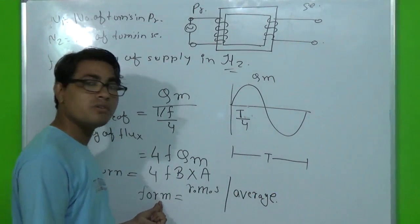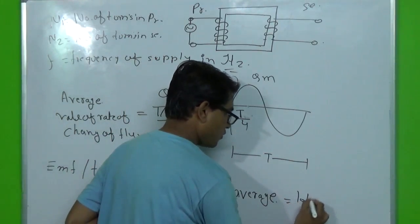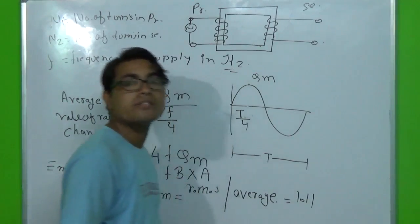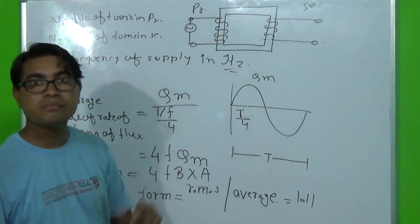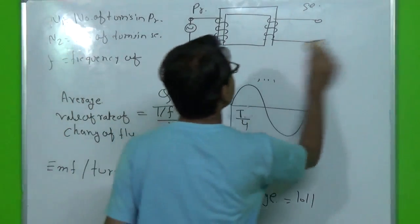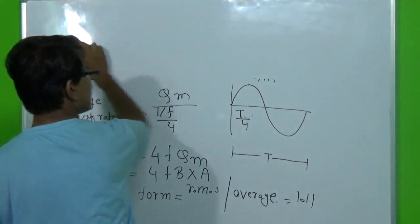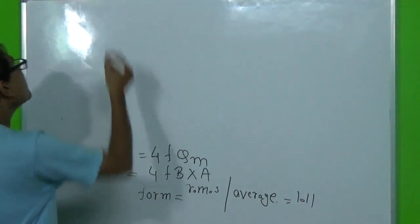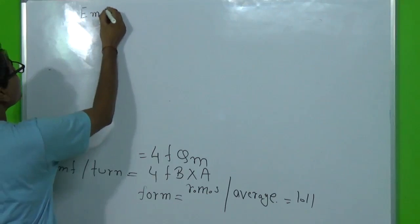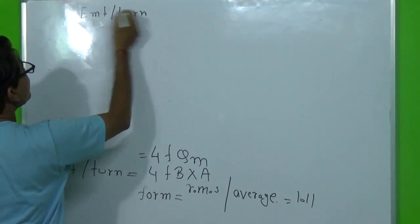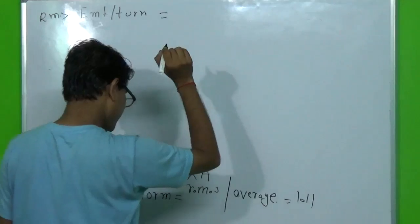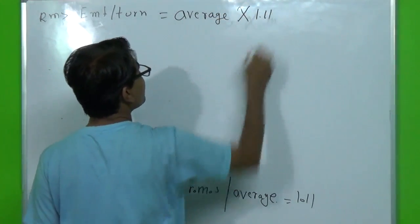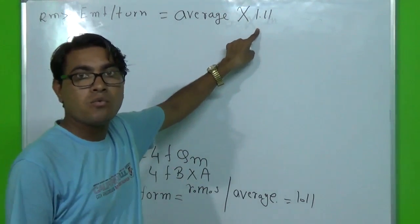We can convert this average value into RMS value. The form factor is given as RMS value divided by average value of an alternating quantity, and it is always equal to 1.11. So we multiply the average value by 1.11 to get the RMS value. The RMS value of EMF per turn will be equal to average value multiplied by 1.11, giving us 4.44·F·B·A.